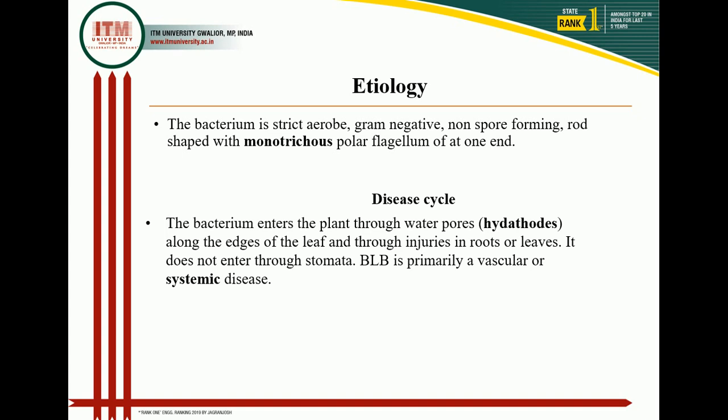Disease cycle: bacteria enter the plant through water pores or hydathodes along the edge of the leaf and through injury in the roots or leaves. Bacterial leaf blight is primarily a vascular or systemic disease; bacterial cells move along the vascular tissue. Rainstorms and typhoons help in the spread of the disease. Irrigation water also carries the organism from field to field. The primary source of infection is bacteria overwintering in the seed husk and endosperm.